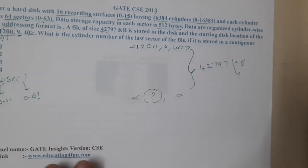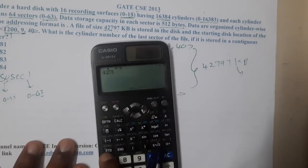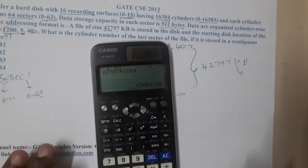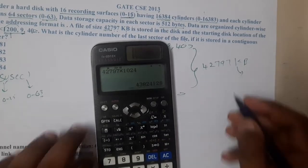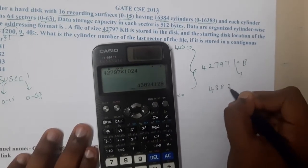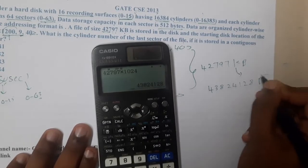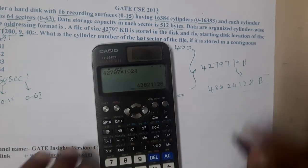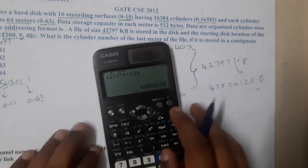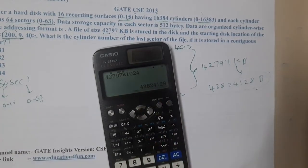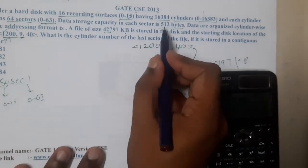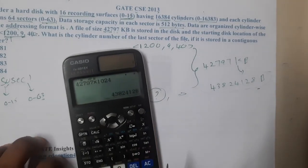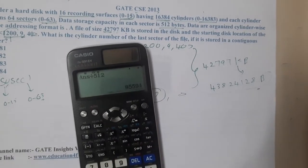To convert 42,797 KB to bytes, multiply by 1024 — not 1000, as that would give an approximate result. The result is 43,824,128 bytes to store. Since each sector holds 512 bytes, dividing gives the number of sectors needed. Dividing 43,824,128 by 512 gives a whole number result.